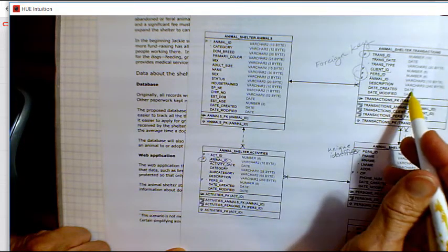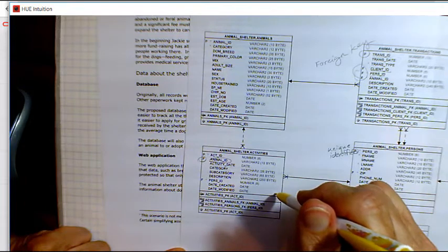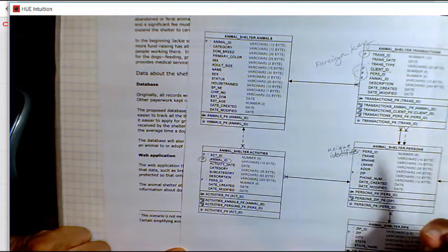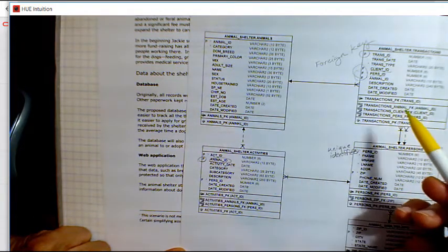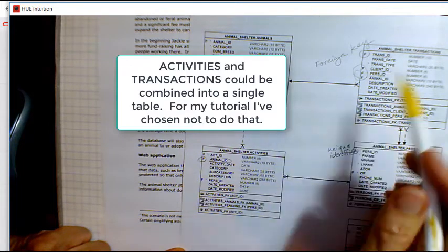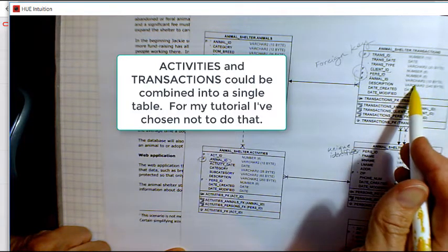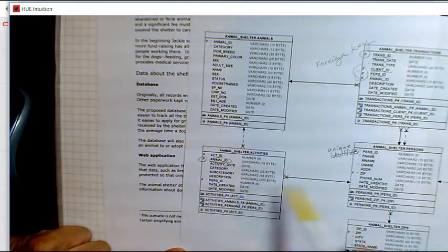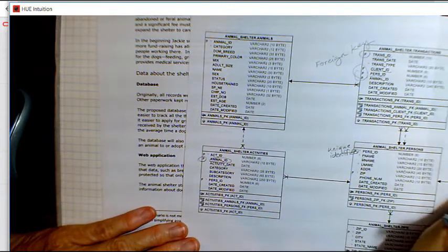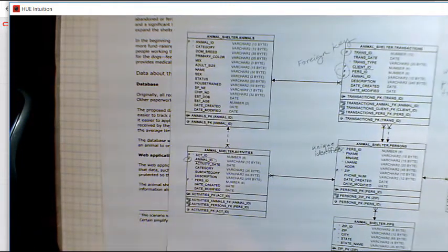You could argue that activities are the same as transactions, and this could be a single table. We don't need a separate table. For my purposes, for the tutorial, I simply wanted to have more tables in the database. But I could certainly see taking this and including activities as transactions.